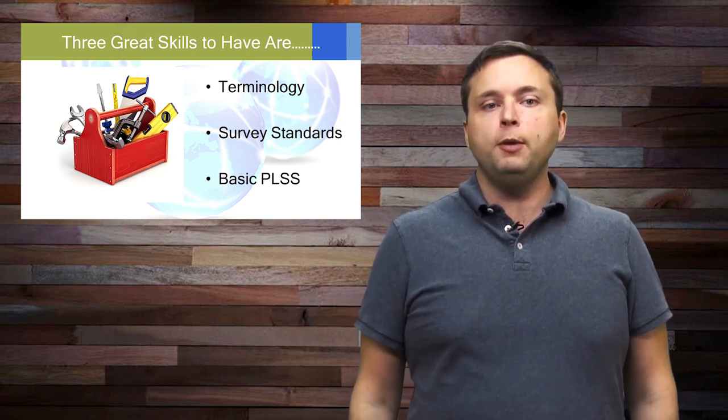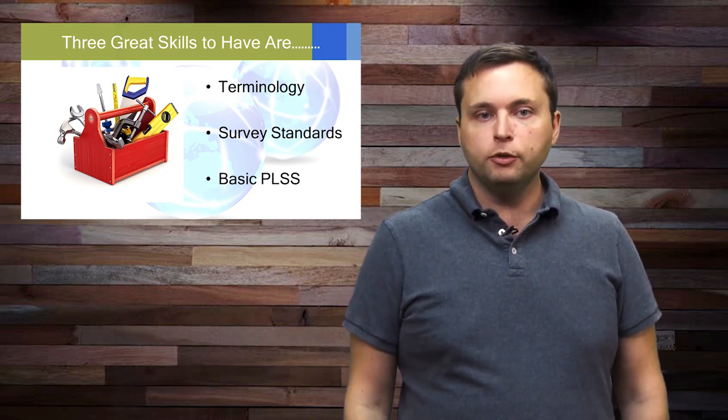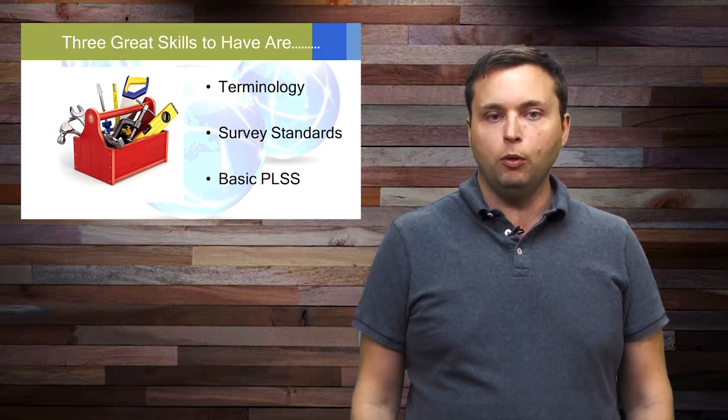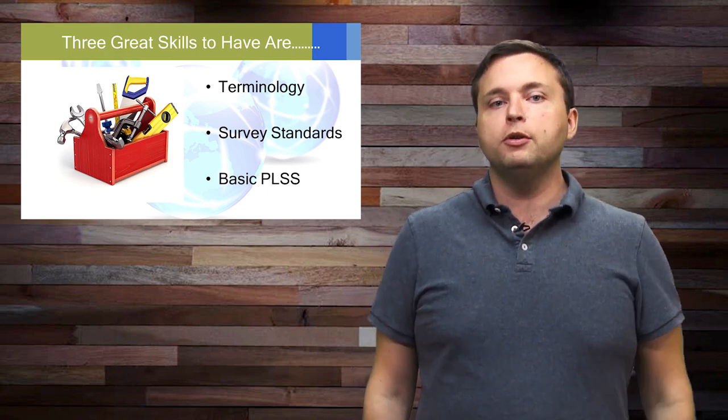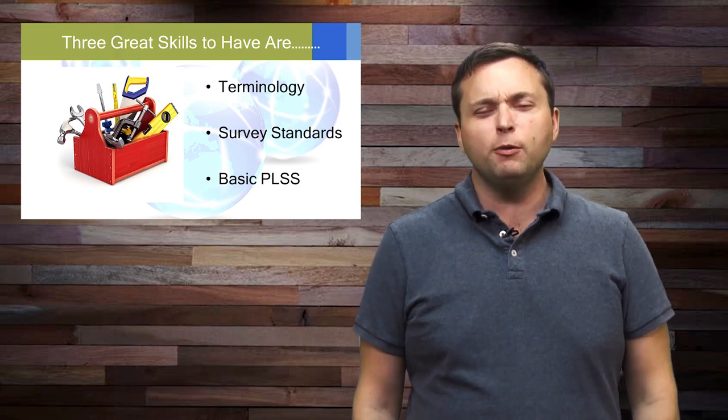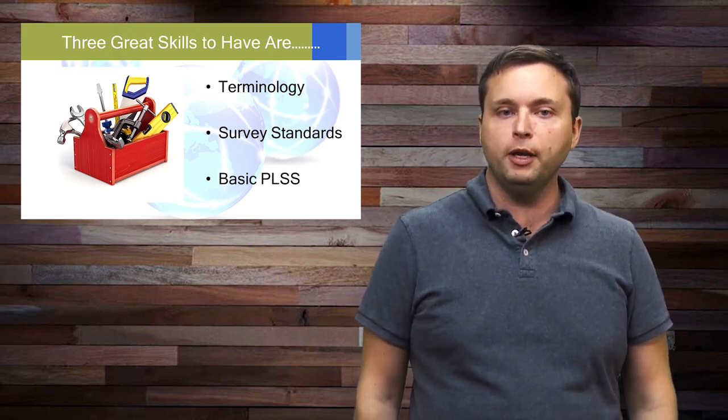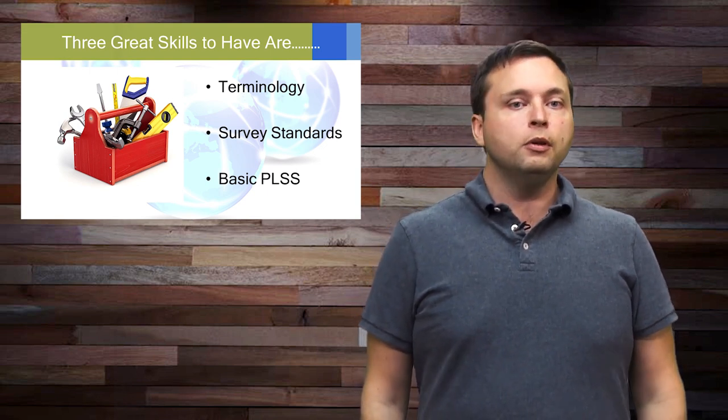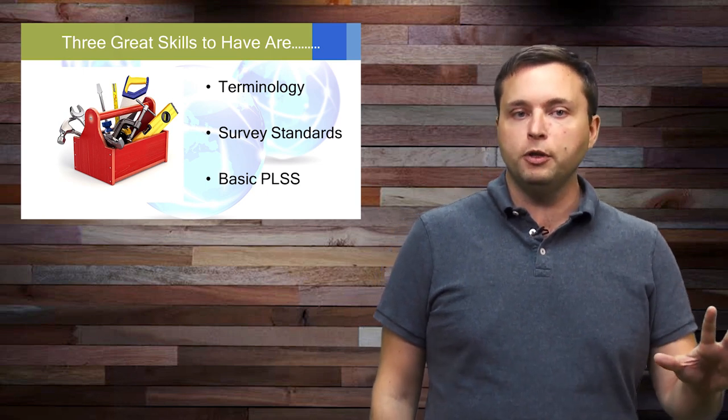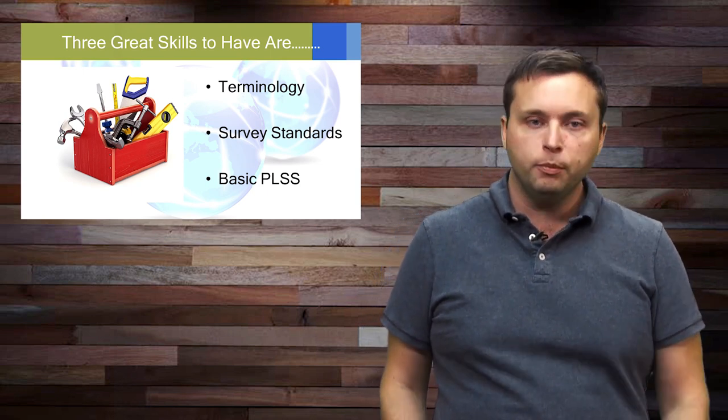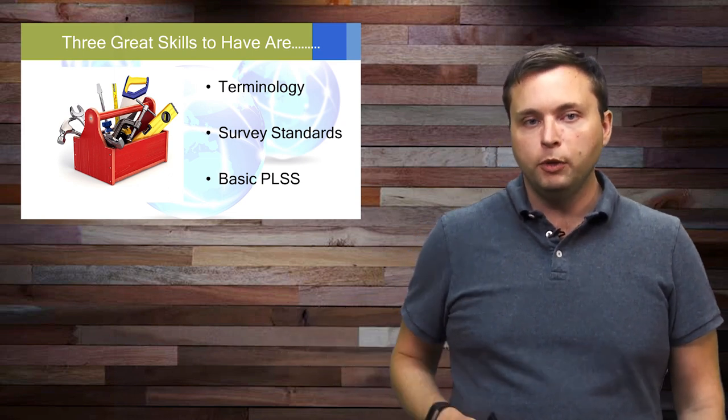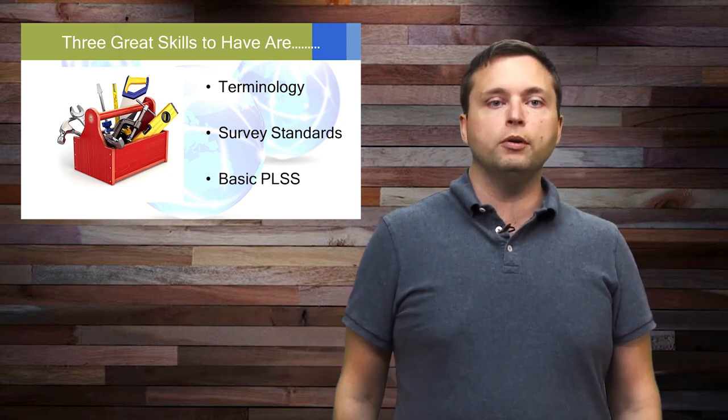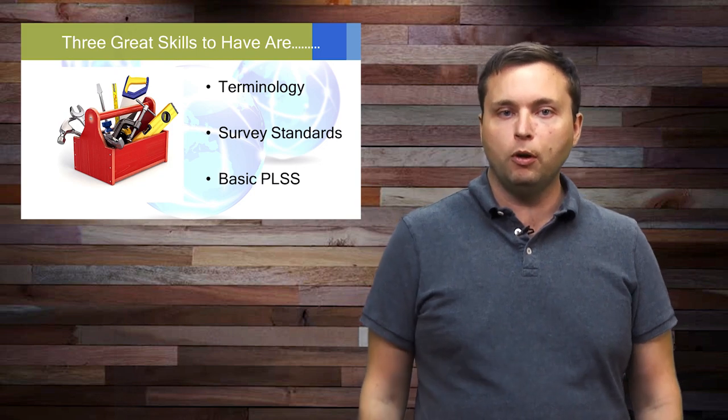And then third is a little basic public land system. Some people may be practicing in Colorado, so you know your PLSS cold. But I'm from Georgia, and before I went to New Mexico to practice, I really didn't know much about the PLSS. So let's review a type of subdivisions like sections and townships and also corners, meander corners, closing corners, section corners, all that good stuff.